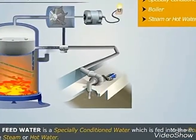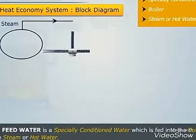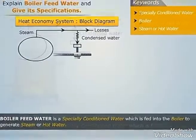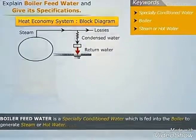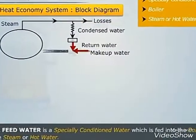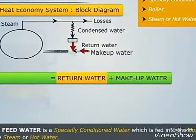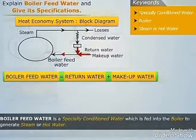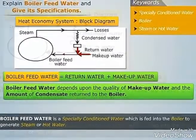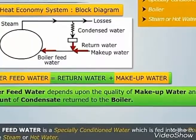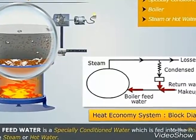Thus, we can say that boiler feed water is specially conditioned water which is fed into the boiler to generate steam or hot water. It is generated through a system of heat economy. Steam produced in the boiler is condensed after use and is returned as pure feed water called the return water. Then some fresh water or make-up water is added to this return water. It is this combination of return water and make-up water which is fed into the boiler as the boiler feed water to generate steam. Note that boiler feed water depends upon the quality of the make-up water and the amount of condensate returned to the boiler.